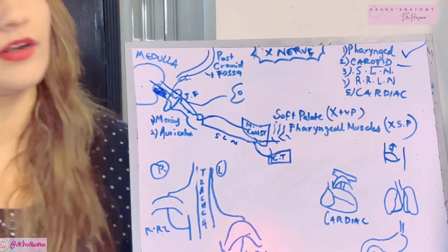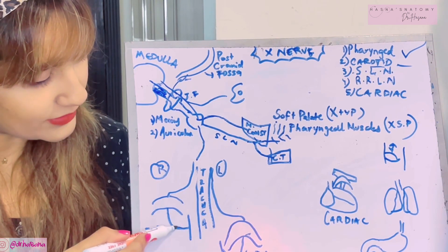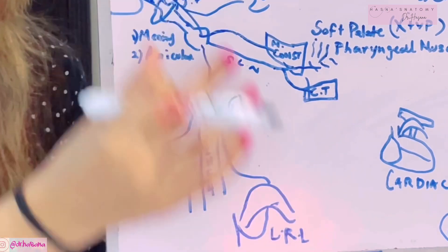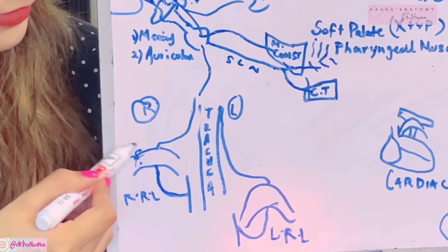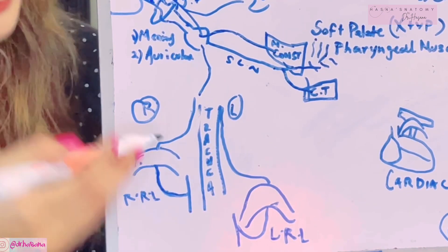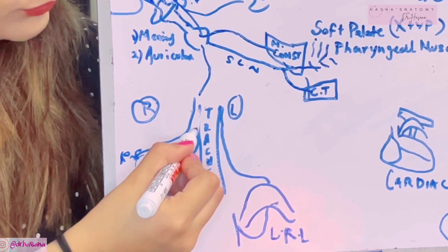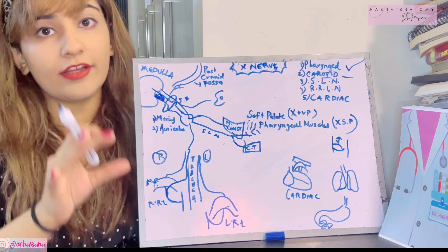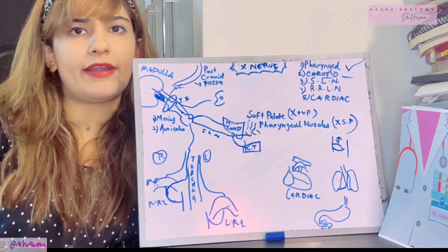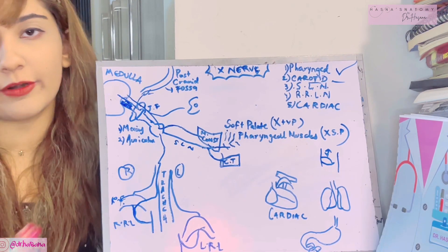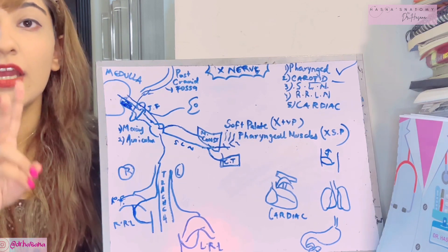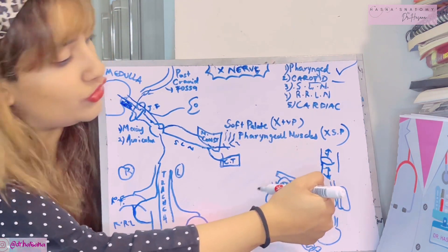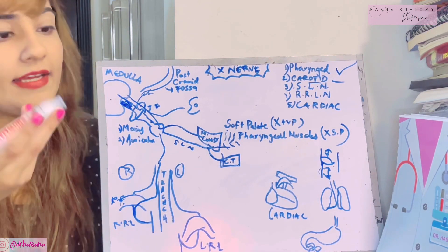Next, from the inferior ganglion, the right recurrent laryngeal nerve arises at the level of the right subclavian artery — it loops below the right subclavian artery — then travels back up into the tracheoesophageal groove. It supplies tracheal branches, esophageal branches, and most importantly all the intrinsic laryngeal muscles except the cricothyroid. It also supplies sensory innervation to the mucous membrane below the vocal cords.